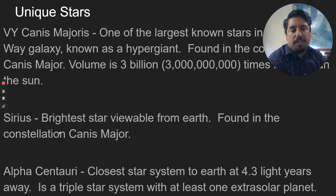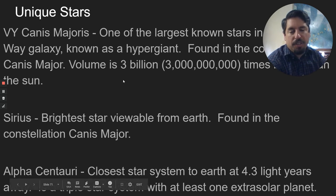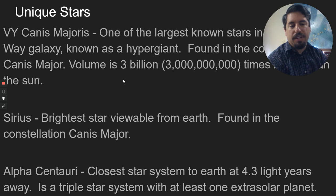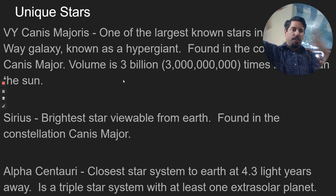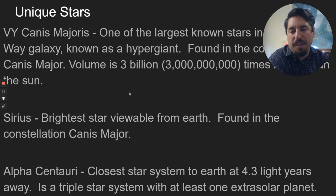Alpha Centauri is the closest star system. It's a triple star system with at least one extra-solar planet. It's 4.3 light years away, which is still a long ways to go — there is no way we can reach there using spaceships, it's so far away and would take us way too long. There are actually three stars moving around a common point of gravity, and there's at least one planet circulating one of those stars.